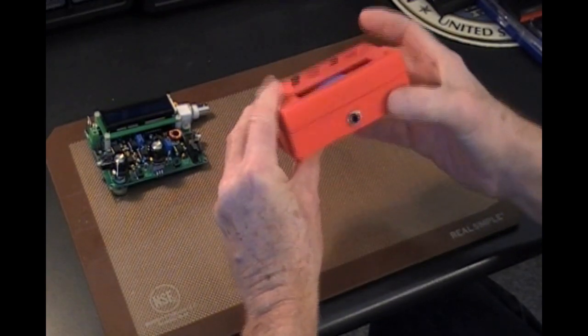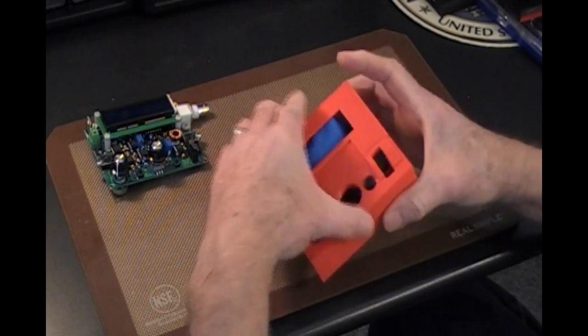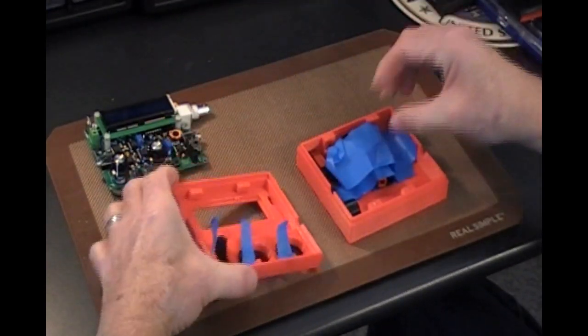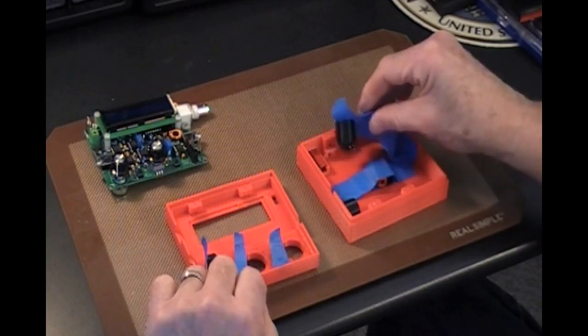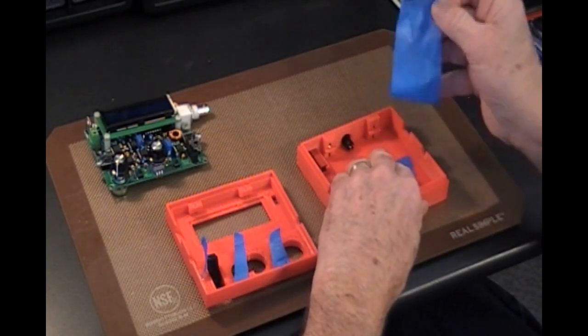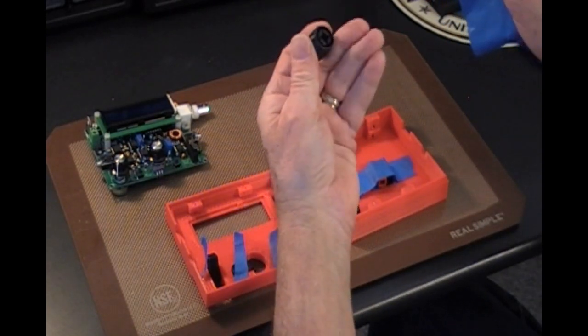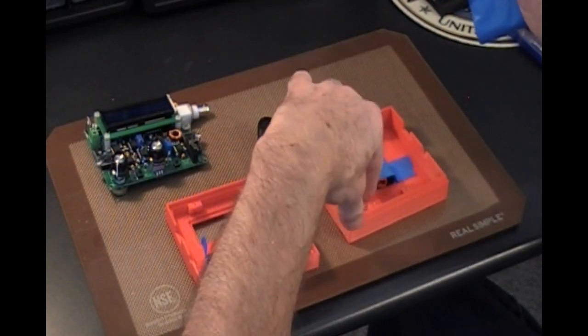But this enclosure comes with the power pole connections. It's all cut out and ready for the transceiver. Now you can't use the knobs. There are two knobs on the transceiver. You can't use those knobs in this enclosure because you need knobs of a different height.